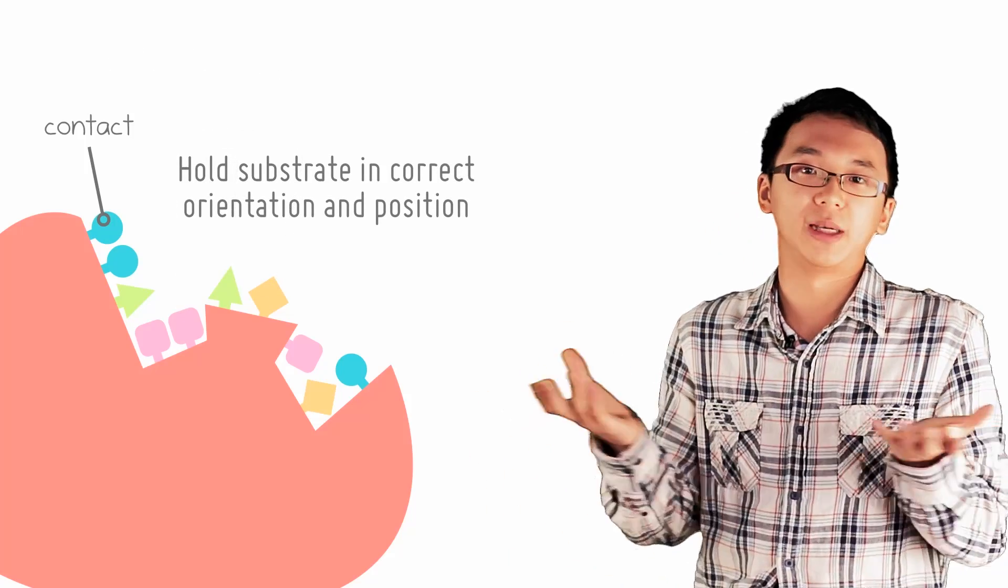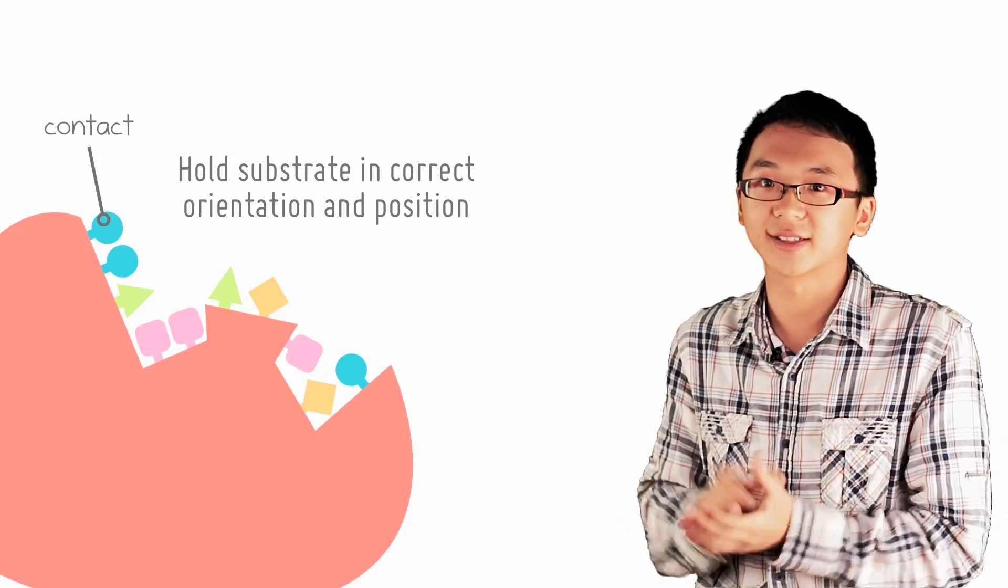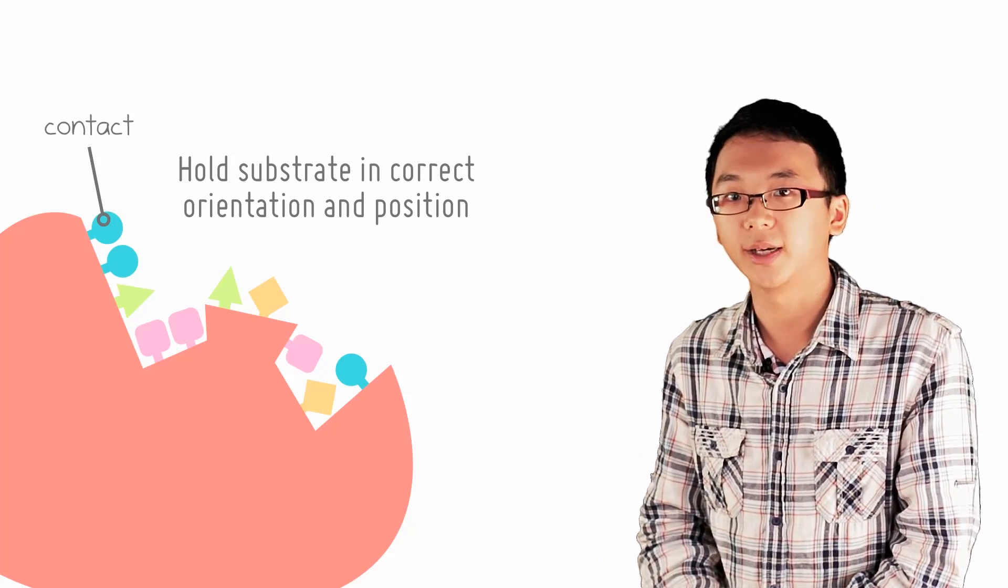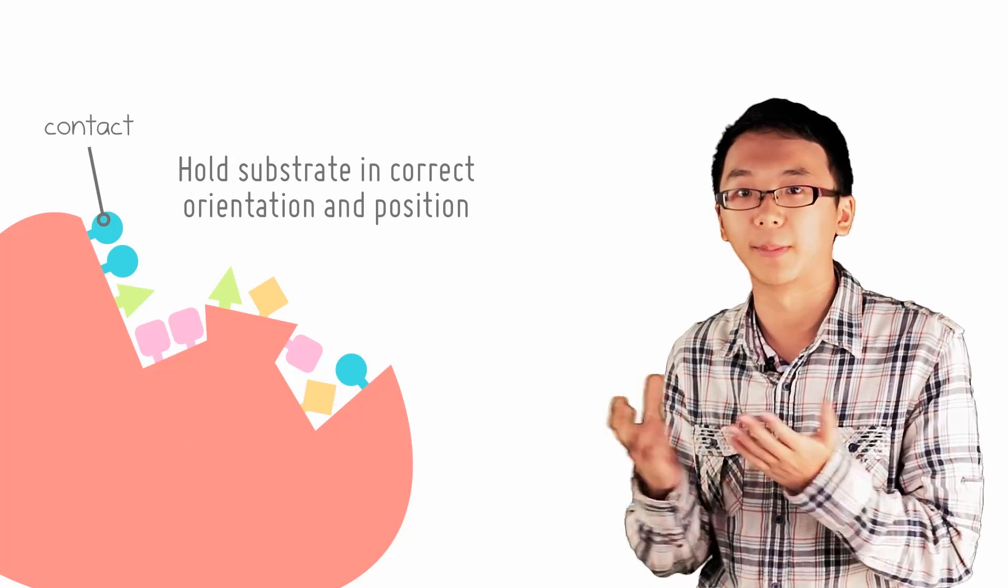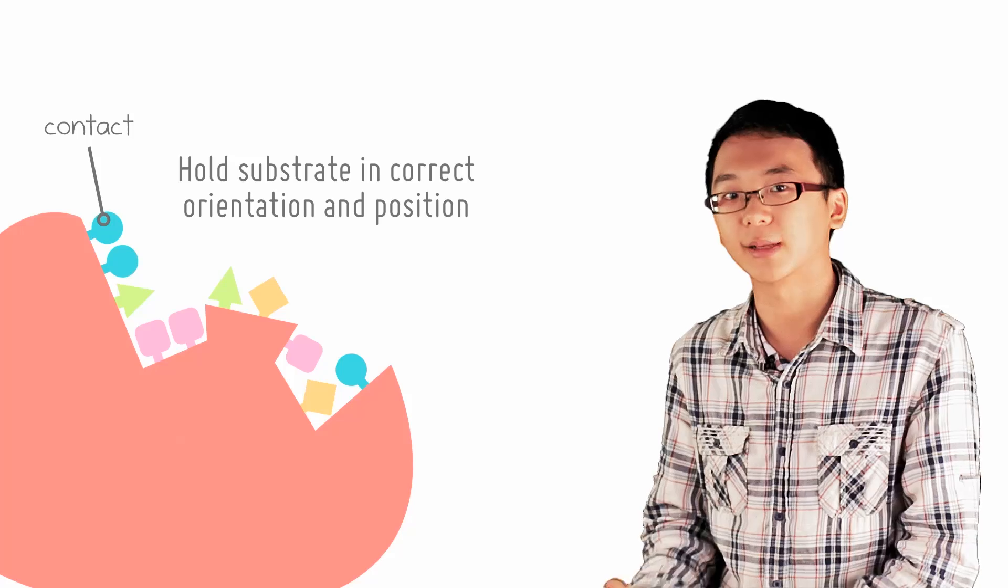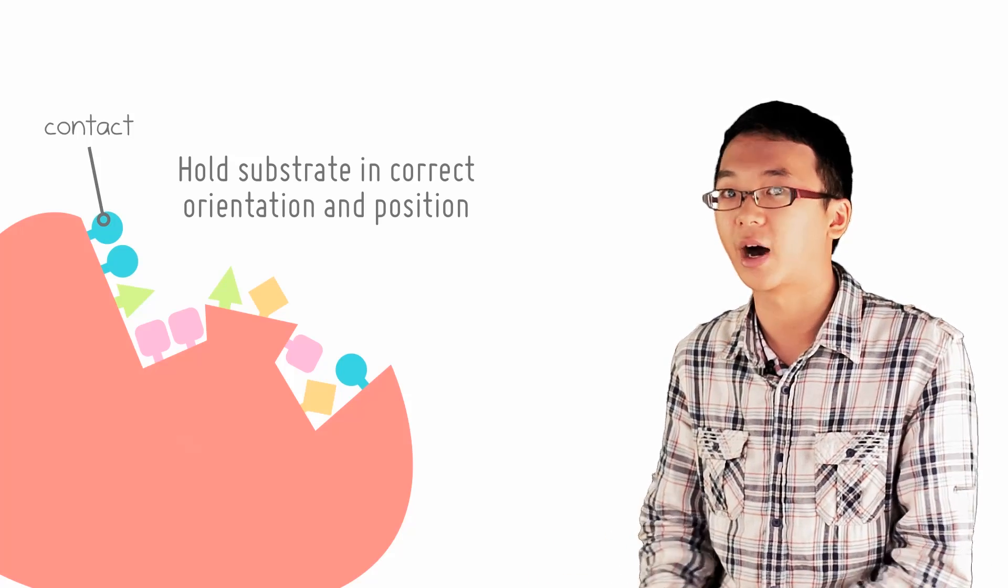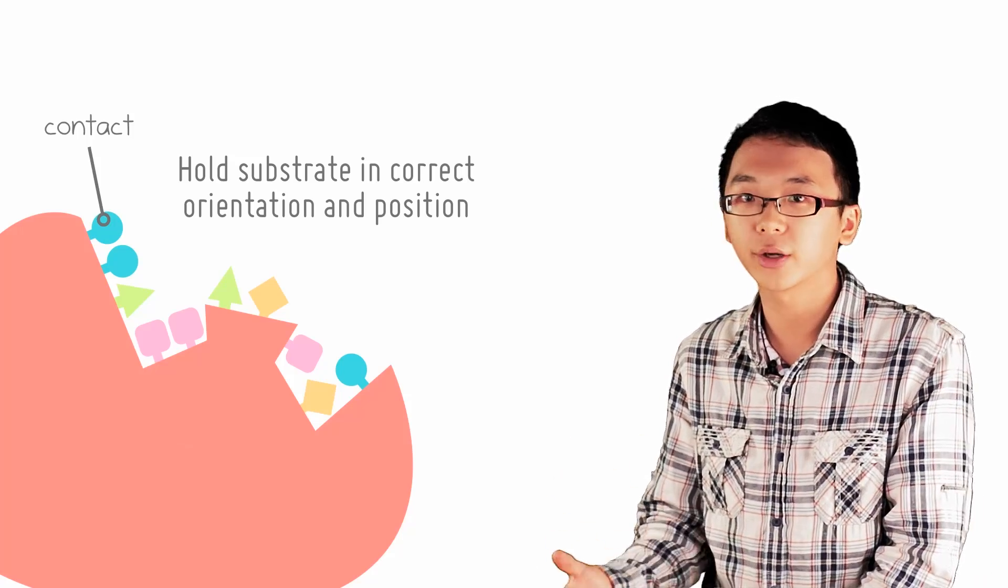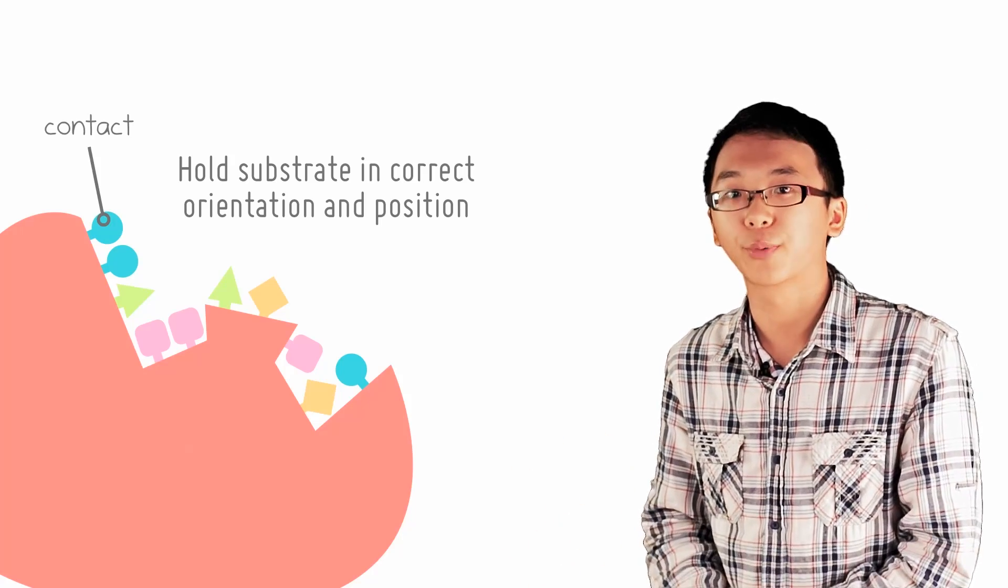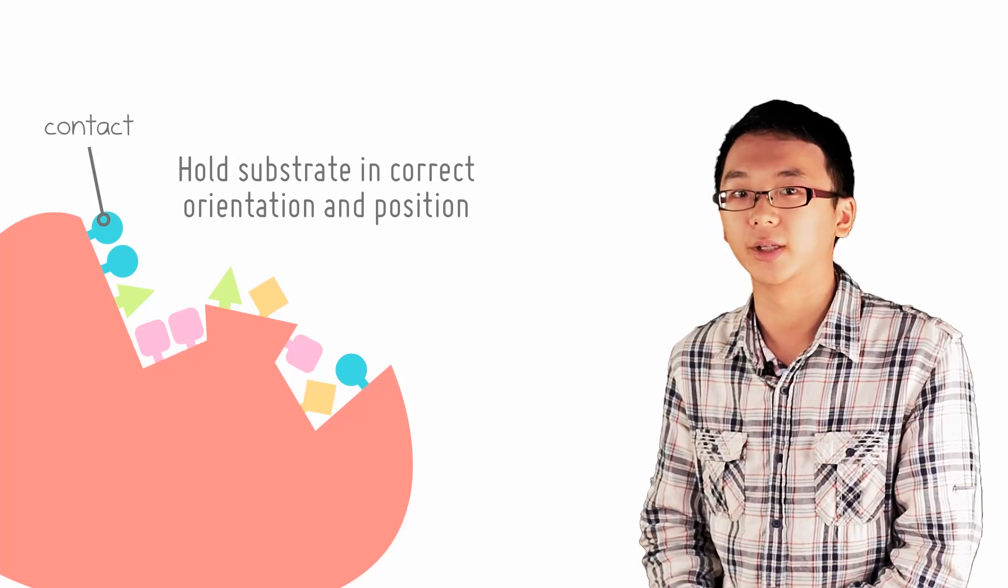Contact residues are the friendliest people in the party. They create contact. They are responsible for holding the substrate in the correct orientation in the active site such that it is open to chemical attacks in the enzymatic reaction. These residues bind to the substrate through weak interactions such as hydrogen bonds for uncharged R groups or ionic bonds for charged R groups. This binding is reversible so products can be easily released after the reaction.